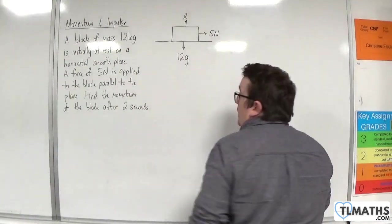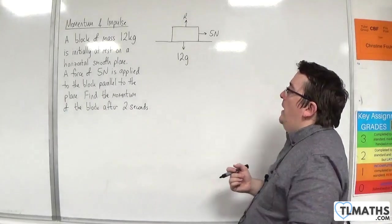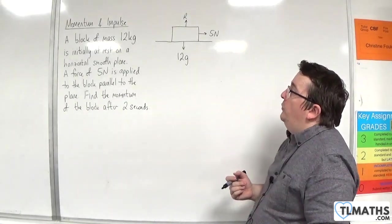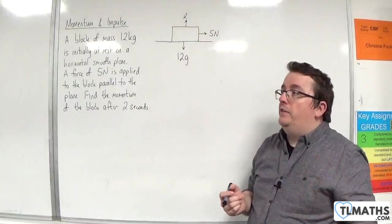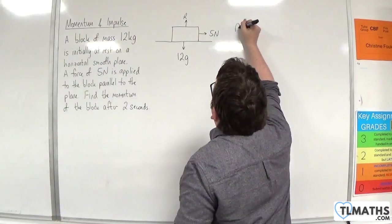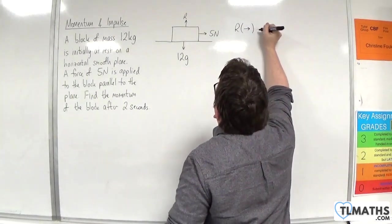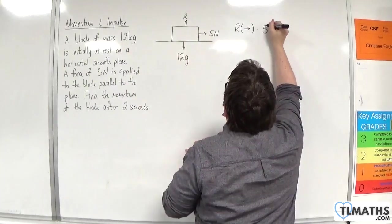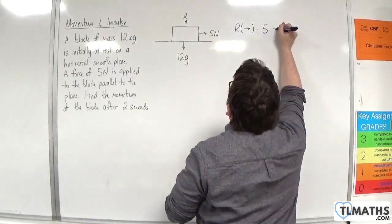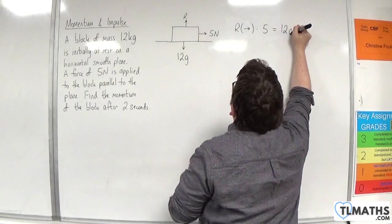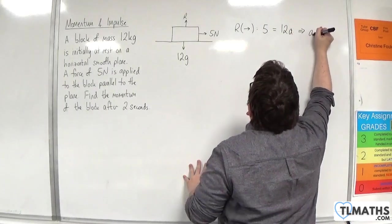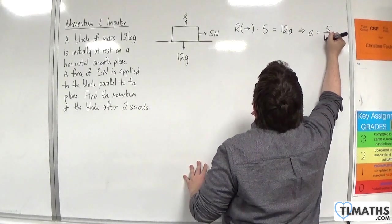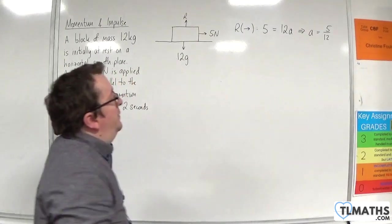Okay, so from that we can resolve to the right and find the acceleration of the block. Resolving to the right, we have 5 newtons, take away no frictional forces, is equal to the mass times the acceleration. So, the acceleration will be 5 twelfths metres per second squared.